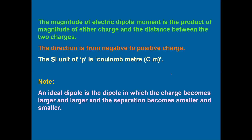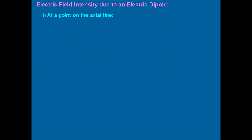Without wasting much time, we will go to the derivation of electric field due to an electric dipole at the axial point. This is one of the very frequently asked board exam questions, so please listen carefully — it is a very easy physics topic.